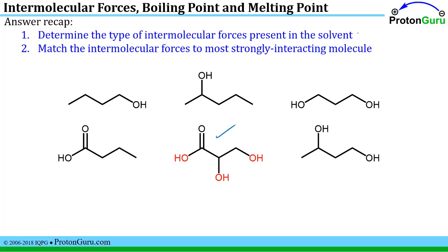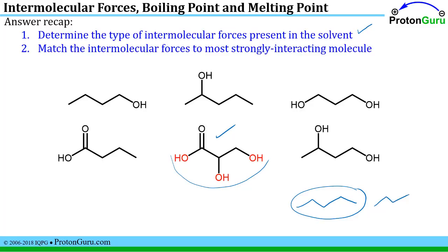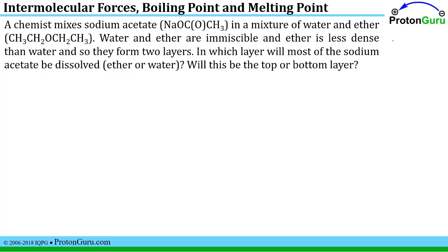To recap the process for a solubility problem: determine what type of interactions are present in your solvent. If your solvent only had van der Waals or London dispersion forces, it would be poor at dissolving a hydrogen bonding molecule but good at dissolving nonpolar molecules. Once you match the intermolecular forces to the most strongly interacting molecule, you'll know which is the most soluble.